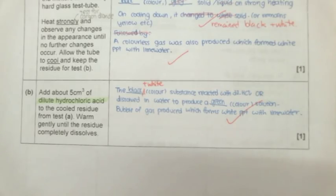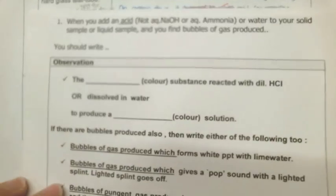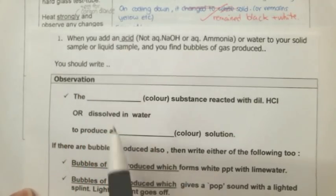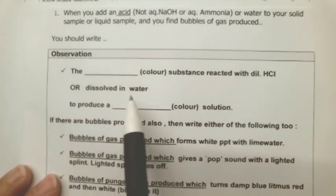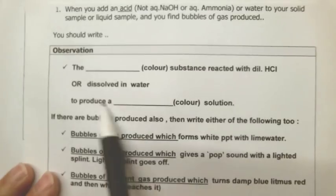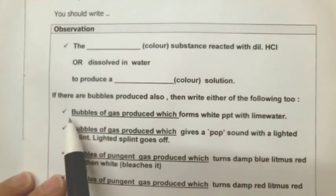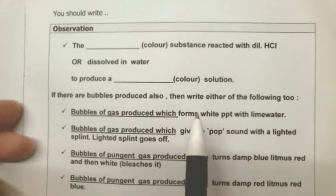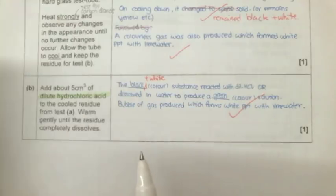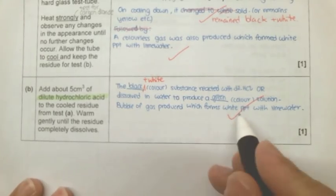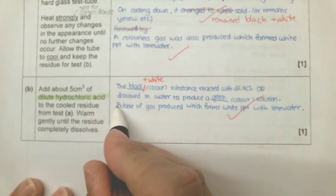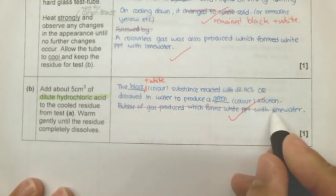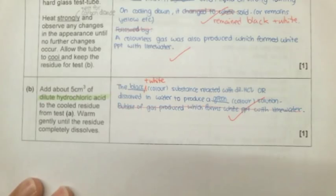You can look for the FAQ. When you add an acid to a solid, you should write this statement over here, and followed by any bubbles of gas produced if there are. In this experiment, there are no bubbles of gas. So here, if you did it well, there should not be any bubbles of gas which forms white PPT with lime water.